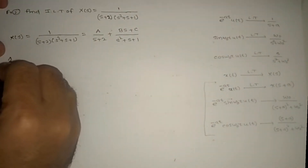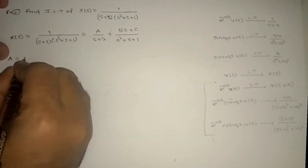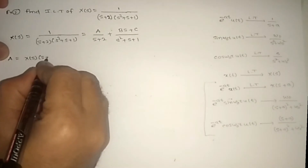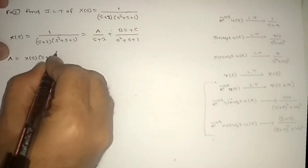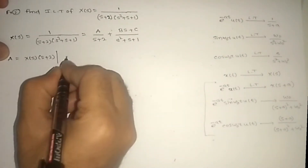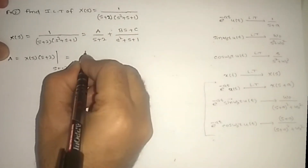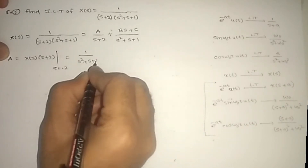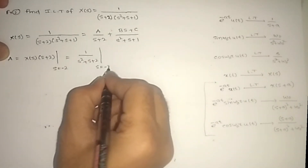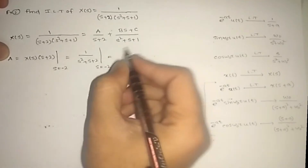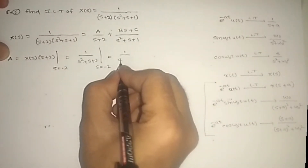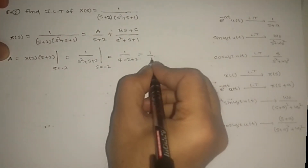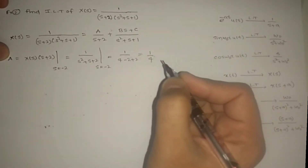To find A: multiply both sides by (s+2) and set s = −2. We get A = 1/(s²+s+1) evaluated at s = −2, which gives 1/(4−2+1) = 1/3. Wait, that is 1/(4−2+1) = 1/3, so A = 1/3.